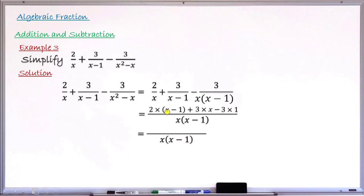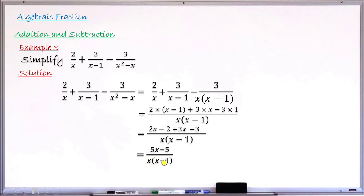Performing the multiplications: 2×(x−1) = 2x−2, and 3×x = 3x, and −3×1 = −3. Collecting like terms: 2x+3x = 5x, and −2−3 = −5, giving 5x−5 all over x(x−1).